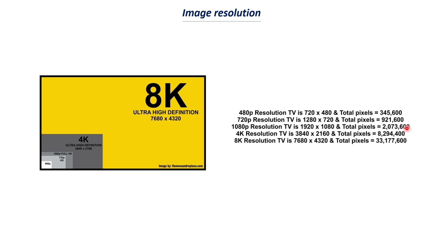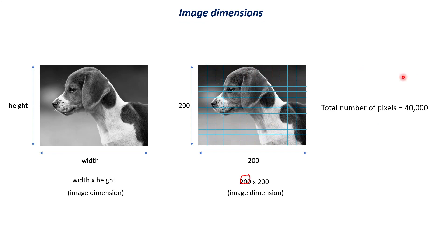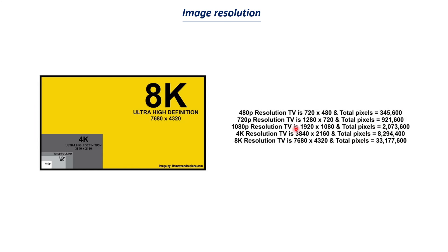As you have more and more pixels, you get a more defined, clearer image. In the previous case with a 200 × 200 image, the total number of small boxes is 40,000. If you consider 720p resolution, you will have 921,600 small boxes, which is the total pixel count.